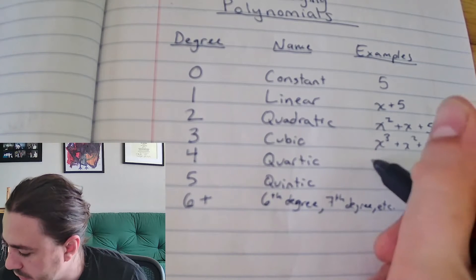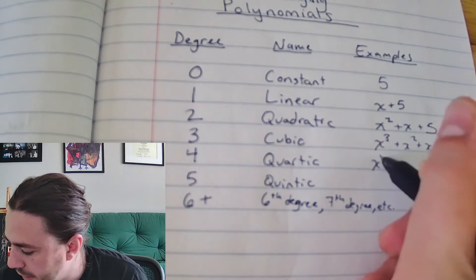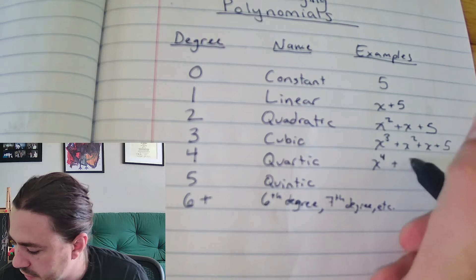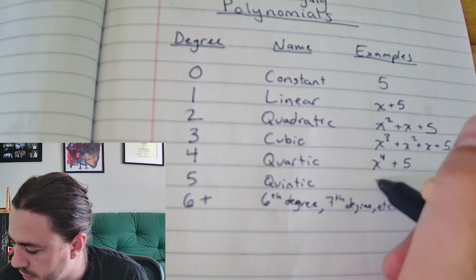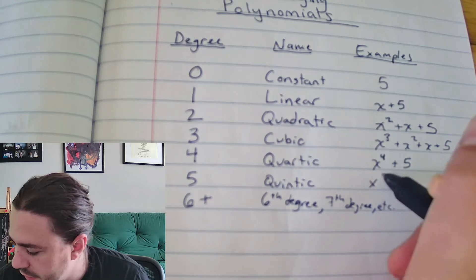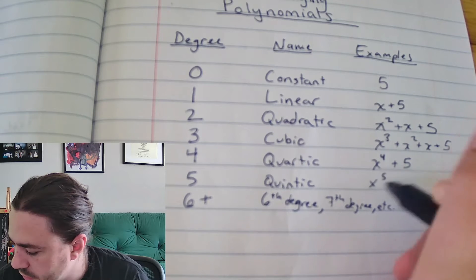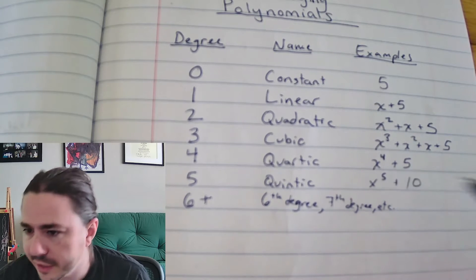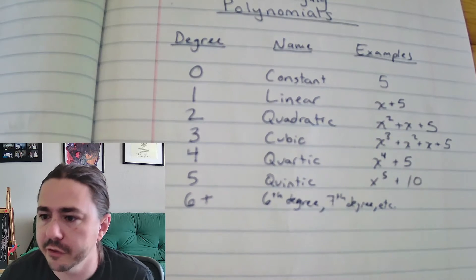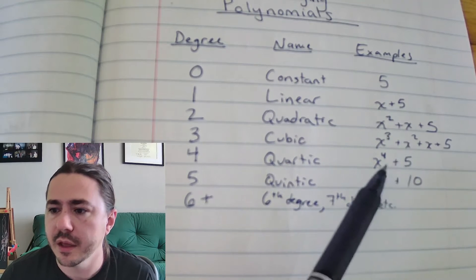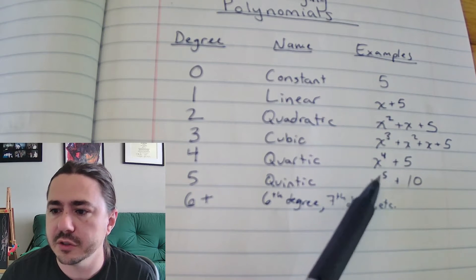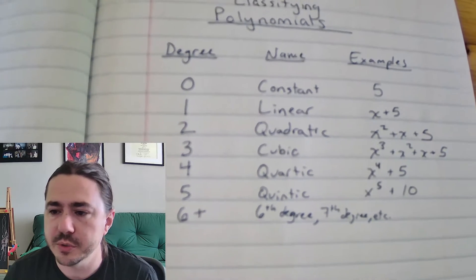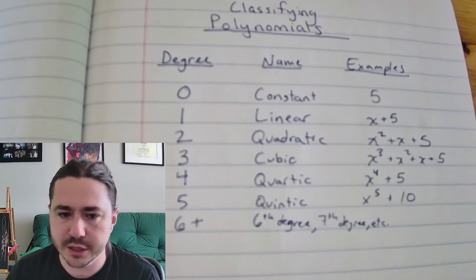Just going back to fill out this table: quartic is where the largest exponent is 4, and quintic is when the largest exponent is 5. So you're really just looking at that largest exponent to name the polynomial.